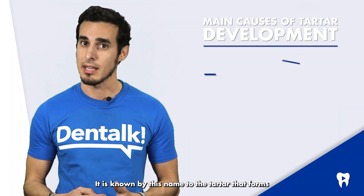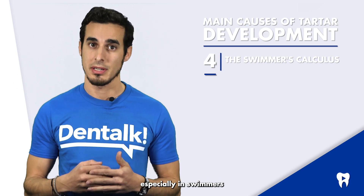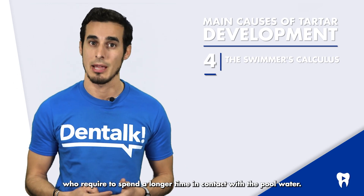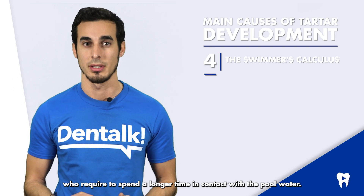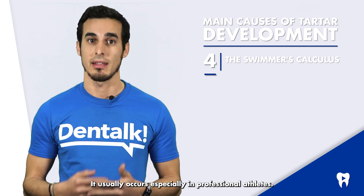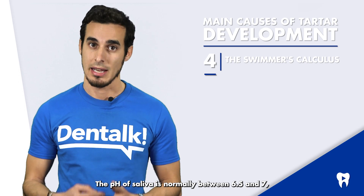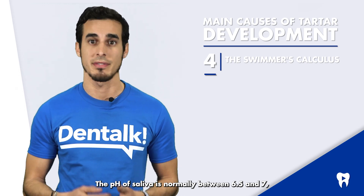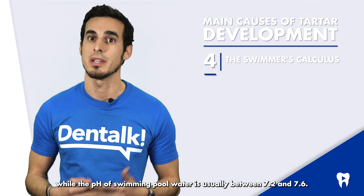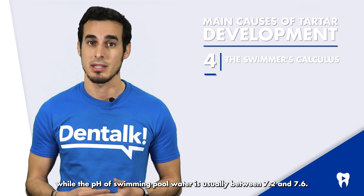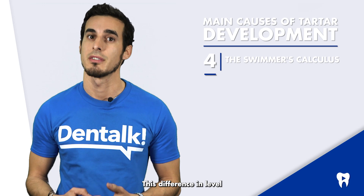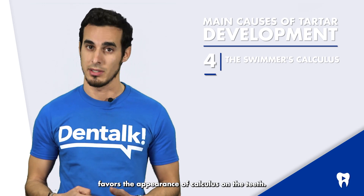It is known by this name to the tartar that forms especially in swimmers who require spending a longer time in contact with pool water. It usually occurs especially in professional athletes. The pH of saliva is normally between 6.5 and 7, while the pH of swimming pool water is usually between 7.2 and 7.6. This difference in levels favours the appearance of calculus on the teeth.